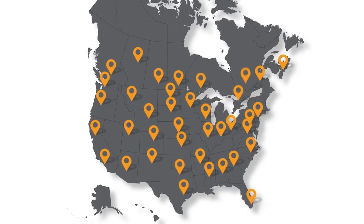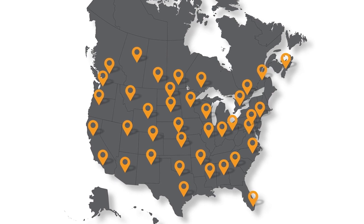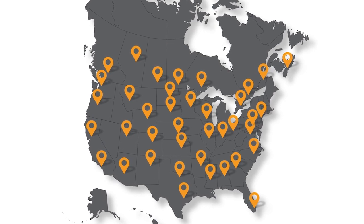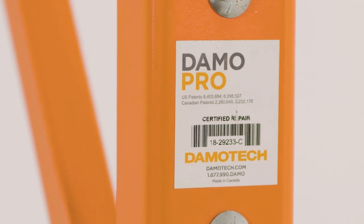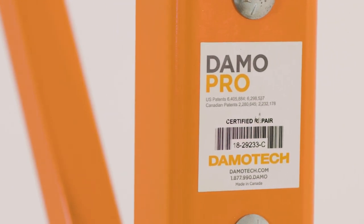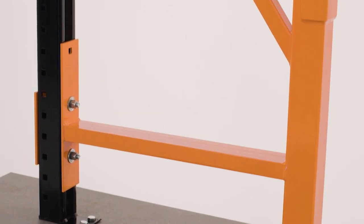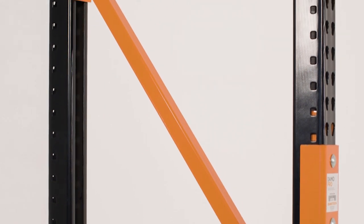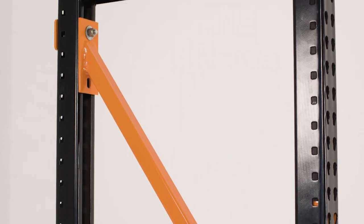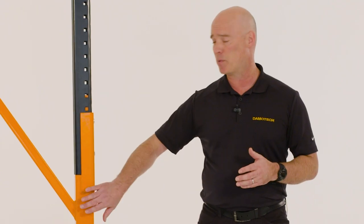I have multiple facilities across the country. Can you service them all? We sure can. We have probably the vastest network of distributors in North America and we're on the road all the time. So wherever your location might be across North America, we can come out and see you. Last question. Why is the DamoPro the best solution on the market for damaged rack columns? As I mentioned, this is the one that started it all. This is the repair kit. And if you're looking for a cost effective and quick solution to your damaged upright, the DamoPro is the one to beat.